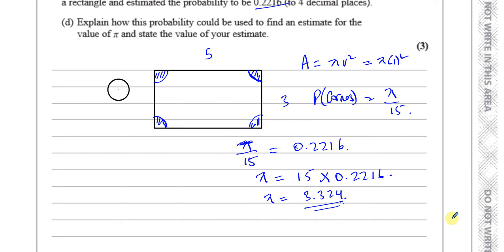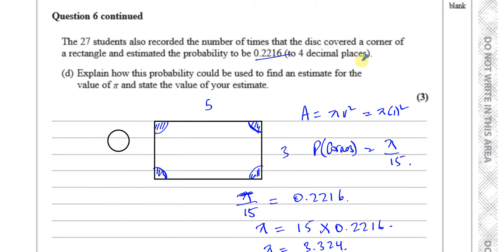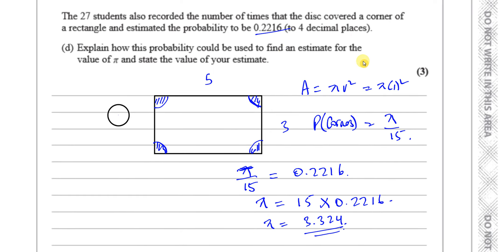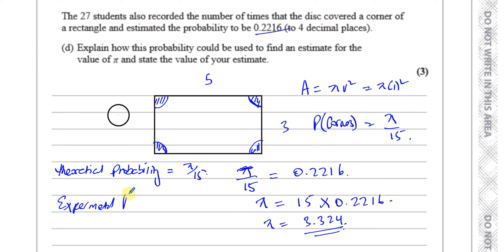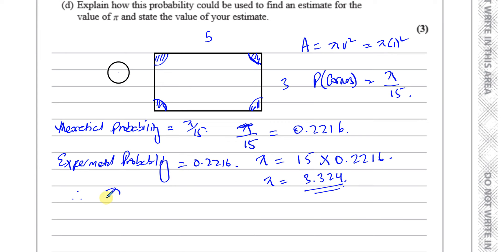They've said the experimental probability is 0.2216. So we can set the theoretical probability equal to the experimental: pi over 15 equals 0.2216. This isn't exactly equal, but it gives us an estimate for pi. So we do 15 times 0.2216, which gives us 3.324. That's our estimate for the value of pi.